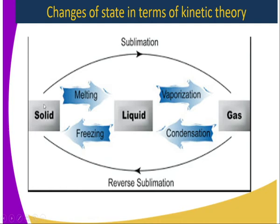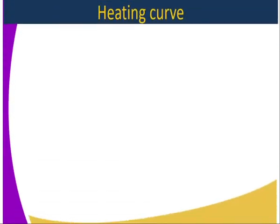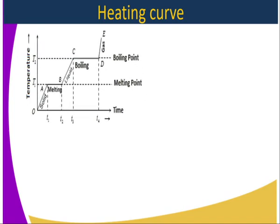There are substances that, when the temperature is increased, don't go through the liquid state — the solid changes directly to gas. This is due to the nature of the bond and structure of the substance. This process is called sublimation, from solid to gas, and the reverse sublimation from gas to solid. When heated, these substances produce a heating curve, which can be used to determine the melting point and boiling point of the substance.